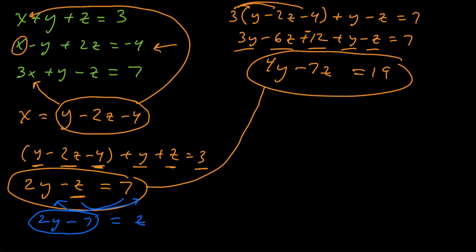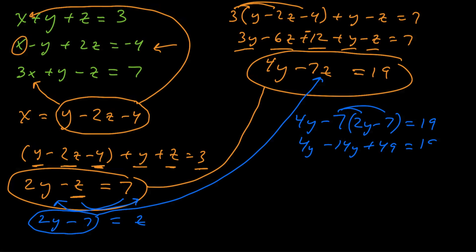So if z equals 2y minus 7, we can put that in place of z in this other equation. So that's going to be 4y minus 7 times what z is, which is 2y minus 7, equals 19. And if I simplify a little bit here, negative 14y plus 49. Okay, and simplify a little bit further, we've got negative 10y, subtract the 49. And if I divide both sides by negative 10, we get y is equal to 3.